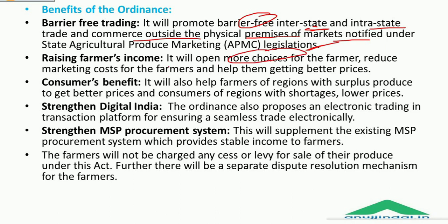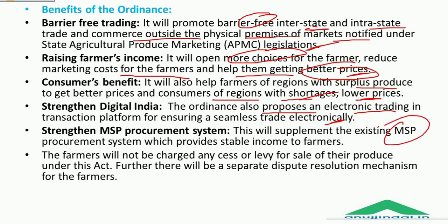The benefits of this ordinance include: promoting barrier-free interstate and intrastate trade and commerce outside the physical premises of markets notified under state APMC legislations; opening more choices for the farmer, reducing marketing costs, and helping them get better prices. It will also help farmers of regions with surplus produce get better prices and consumers in regions with shortages get lower prices. An electronic trading and transaction platform is proposed for seamless digital trade, strengthening Digital India. Farmers will not be charged any cess or levy for sale of their produce under this act, and there will be a separate dispute resolution mechanism for farmers.